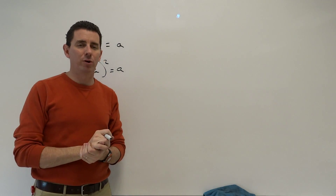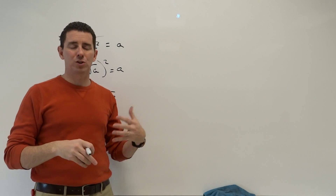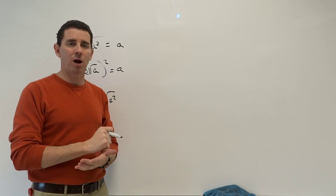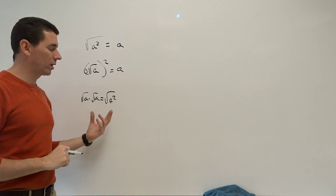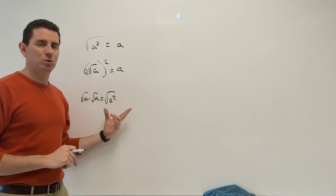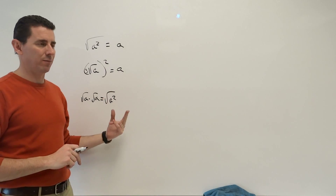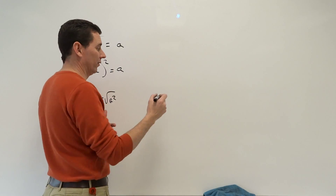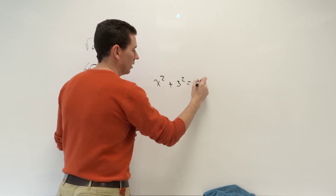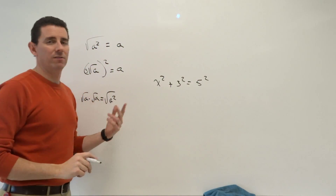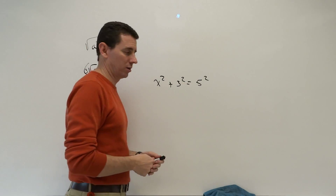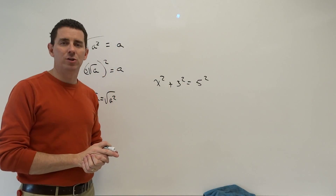Hopefully this clears everything up for you. Worksheet tonight — we're going to review this again tomorrow. I'm not re-teaching it; we're going to jump right into problems. We'll take it a step further with adding and subtracting radicals, and then further still to look at an equation like x squared plus 3 squared equals 5 squared and solve for x — basically setting us up for the Pythagorean theorem. See you guys tomorrow.